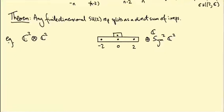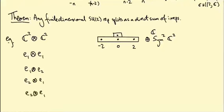Here's a basis for the tensor product. I pick a basis for C² — vectors E₁ and E₂ — and tensor them together to get E₁⊗E₁, E₁⊗E₂, E₂⊗E₁, and E₂⊗E₂. I need to figure out how H acts on these. H is [[1,0],[0,−1]], so in the standard representation H(E₁) = E₁ and H(E₂) = −E₂.